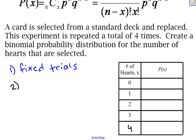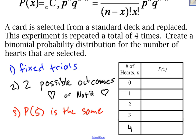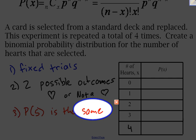Second, I should check that there are two possible outcomes. That doesn't mean a 50-50 chance — it just means there are two outcomes. In this case it's either a heart or not a heart, so there are two possible outcomes. Third, the probability of a success must be the same every time. The key phrase here is 'and replaced' — since I'm replacing the cards, the probability of getting a heart is the same every time.